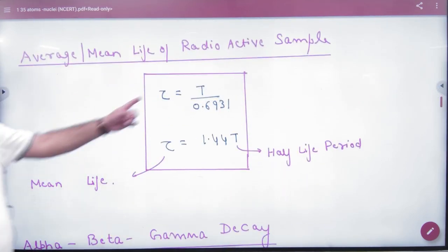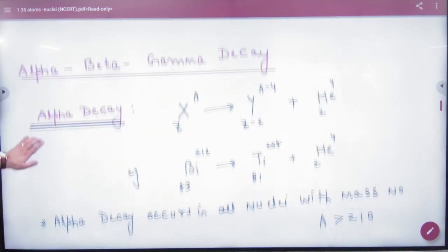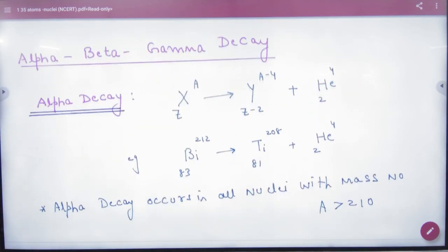Average or mean life formula I have written you. Same. Next is alpha, beta and gamma decay.